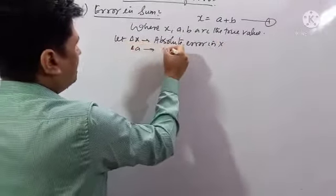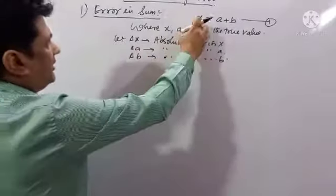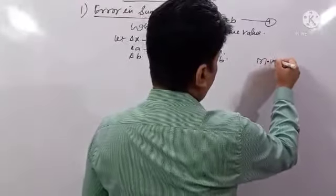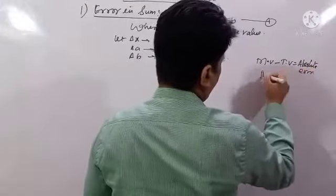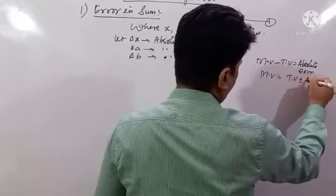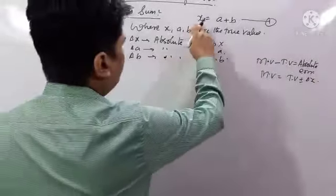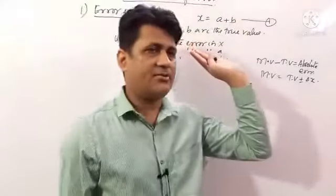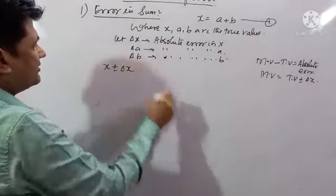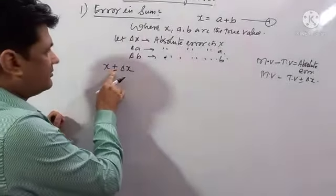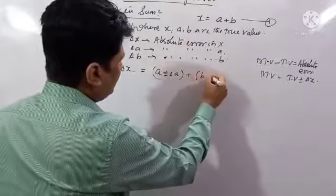Delta a is the absolute error in a, and delta b is the absolute error in b. This is the measured value equation: x plus or minus delta x. Absolute error may be positive or negative. Absolute error in a means a plus or minus delta a. Absolute error in b means b plus or minus delta b.